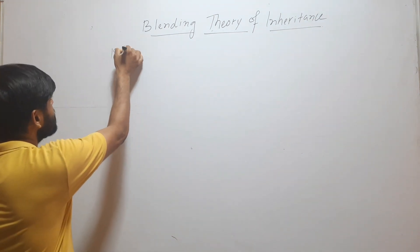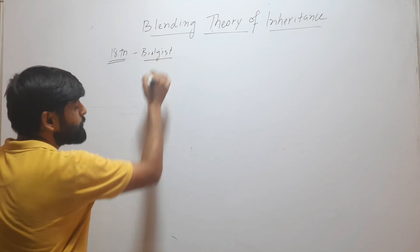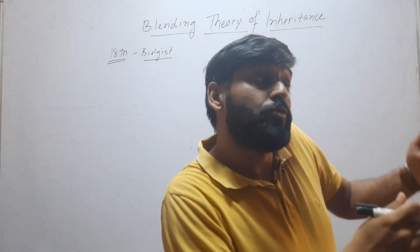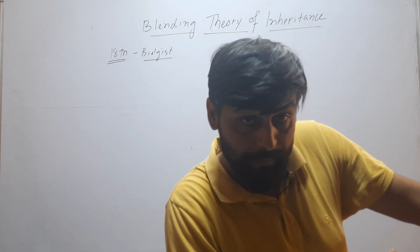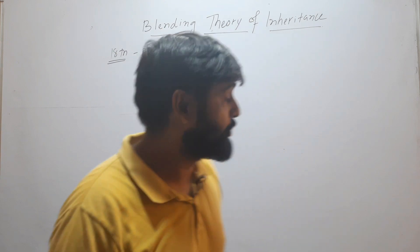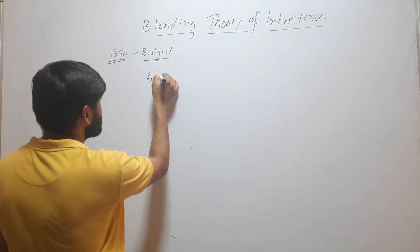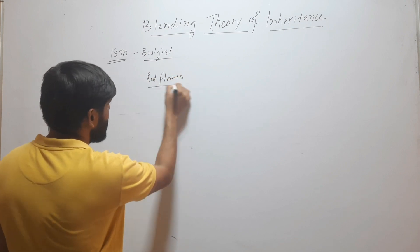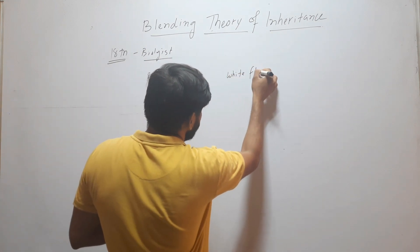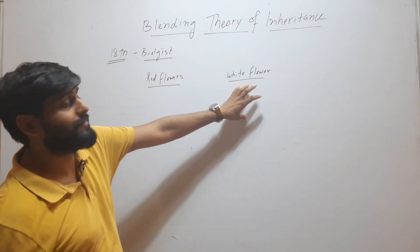In the 18th century, biologists proposed a theory to explain how characters are passed from parents to offspring, and this theory was called blending theory of inheritance. Let's understand this theory with an example. Suppose here I have a plant with red flowers and another plant of the same species with white flowers. So we have two parents: a plant with red flower and a plant with white flower.